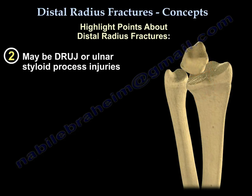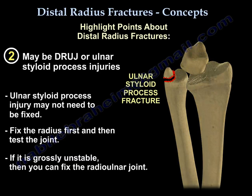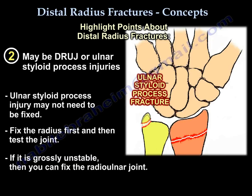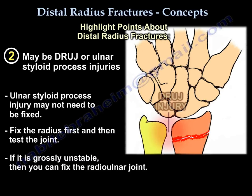There may be a distal radio-ulnar joint fracture or ulnar styloid process fracture or injury. The ulnar styloid process injury may not need to be fixed, so you fix the radius first, then test the joint. If the joint is grossly unstable, then fix the radio-ulnar joint, usually with some Kirschner wires. Or you can fix the ulnar styloid process if the fracture is big.